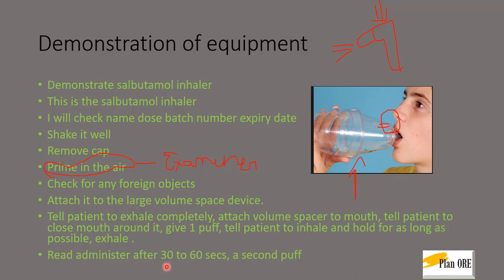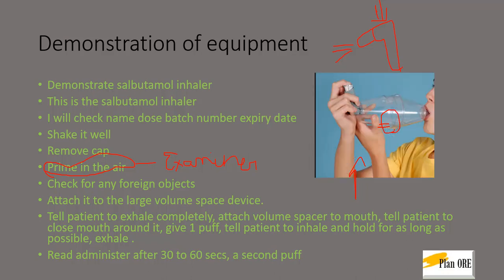Then repeat it — re-administer after 30 to 60 seconds a second puff. Some notes say 60 seconds and some say 30 seconds, so the better way is to say approximately 60 seconds. Again tell the patient to exhale first, place the volume spacer device, press the inhaler, and tell the patient to inhale the medication into the spacer. You can give approximately 10 puffs at a time, then wait and watch if the patient is getting better, as we learnt in the management section in part one.